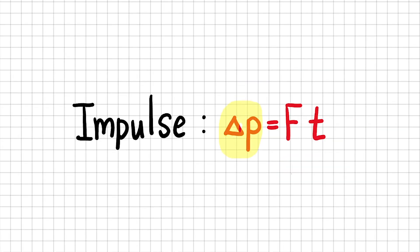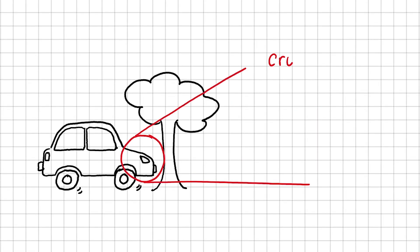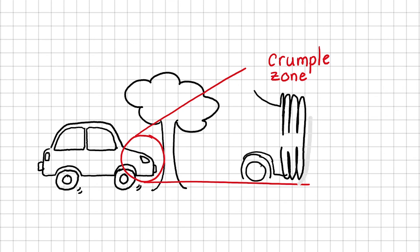We can say that for the same change in momentum or impulse, a large contact time yields a small collision force. And how can we achieve this practically? A car needs a crumple zone that crushes and maintains contact with the tree during a crash. We shouldn't design a car that rebounds the moment it hits an obstacle, because that will minimize the contact time.